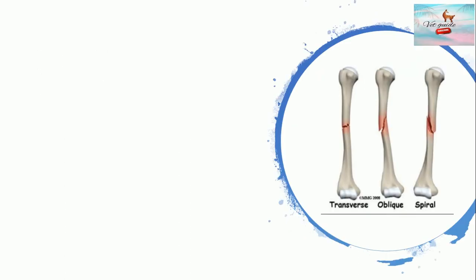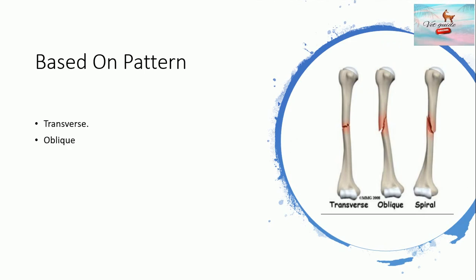A fracture on the basis of patterns can be transverse, oblique, spiral, comminuted, segmental, stellate, or a greenstick fracture. We will see each pattern in detail in the following slides.